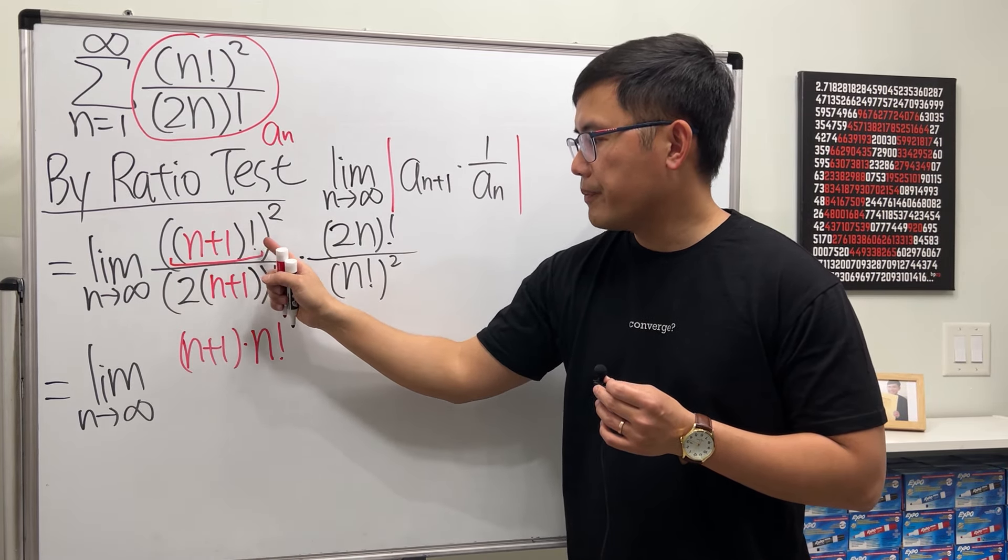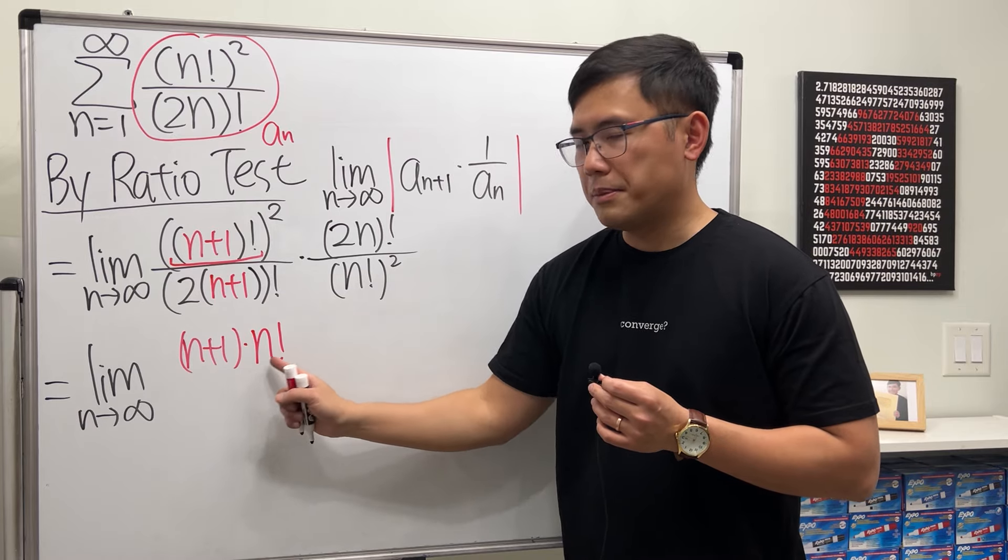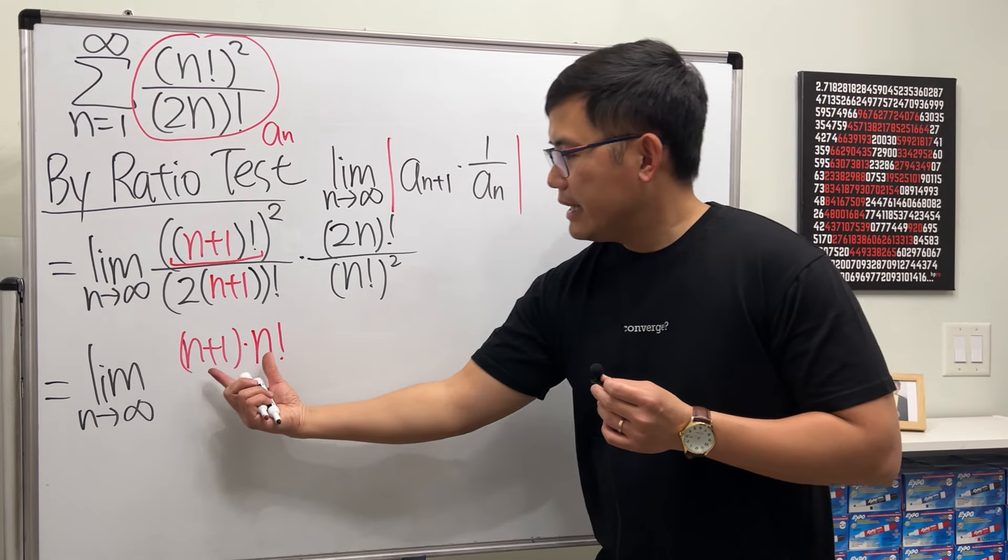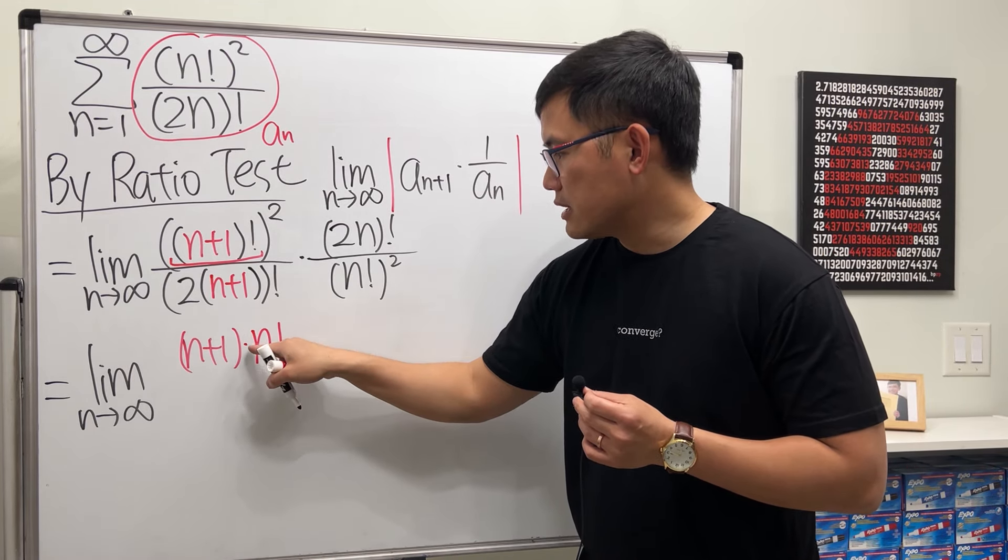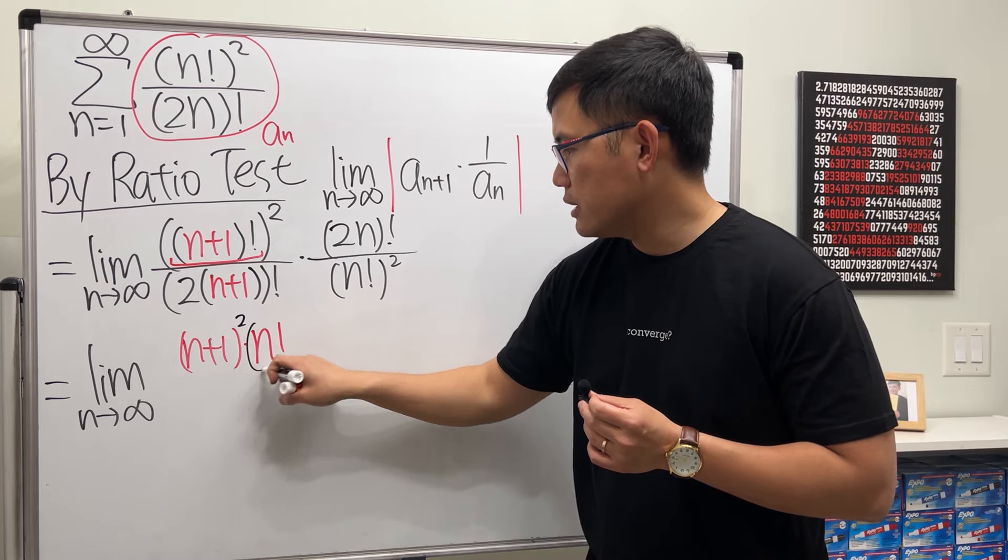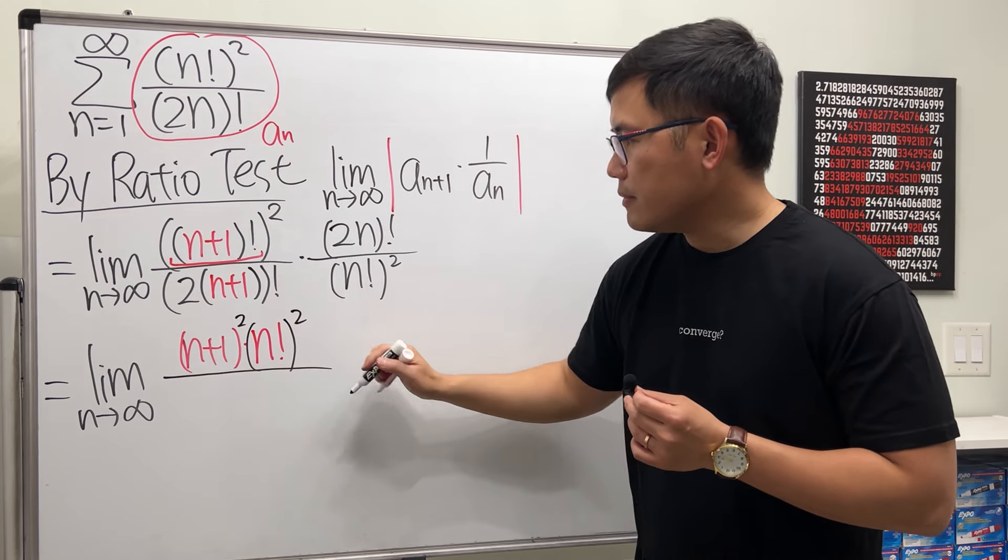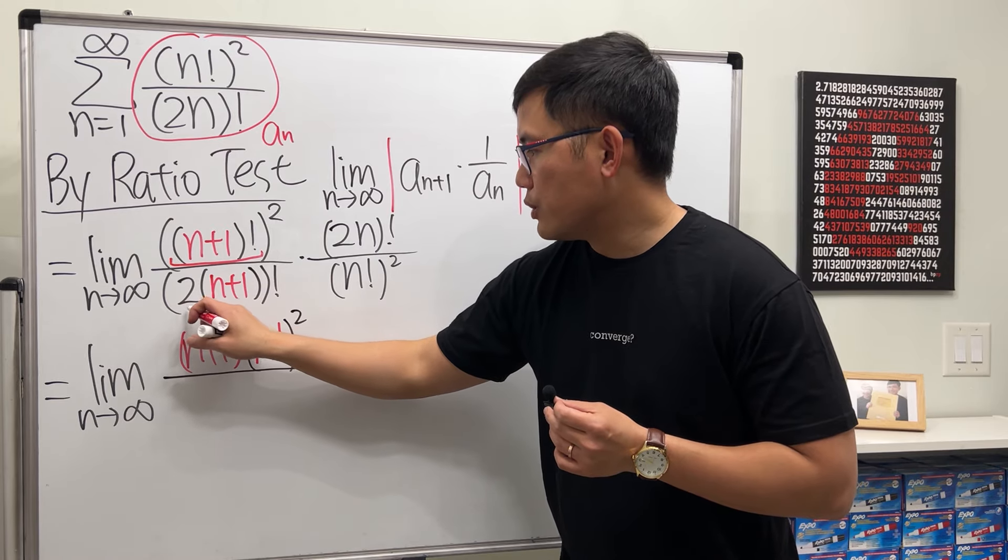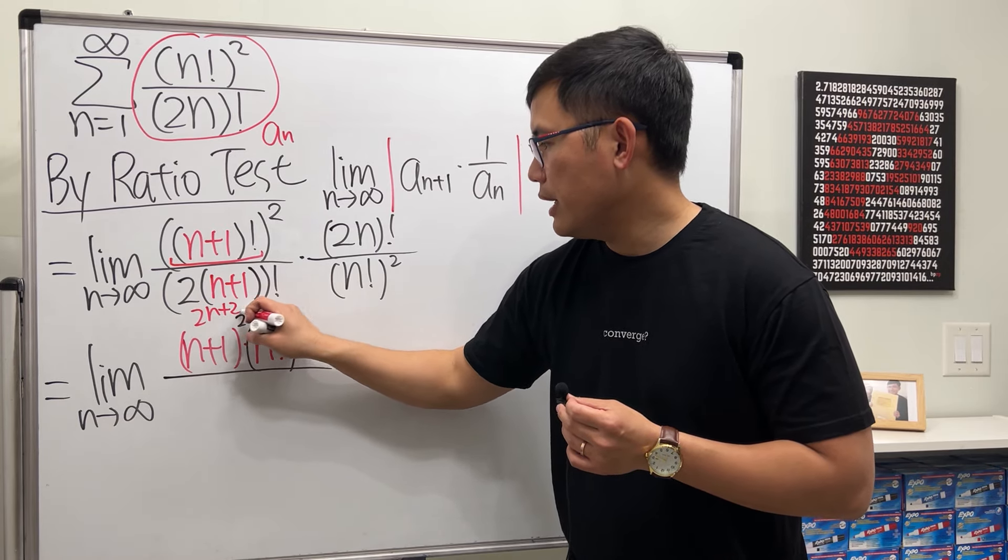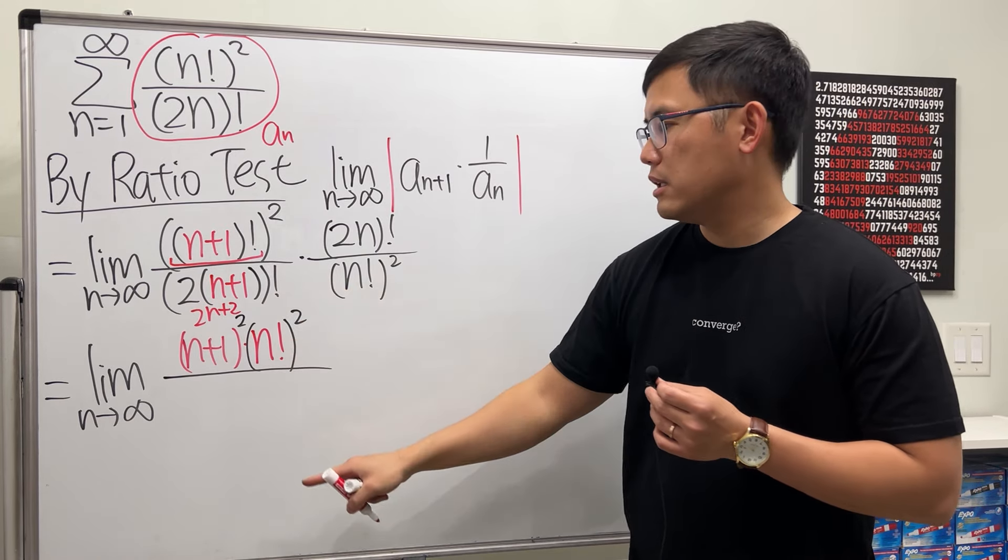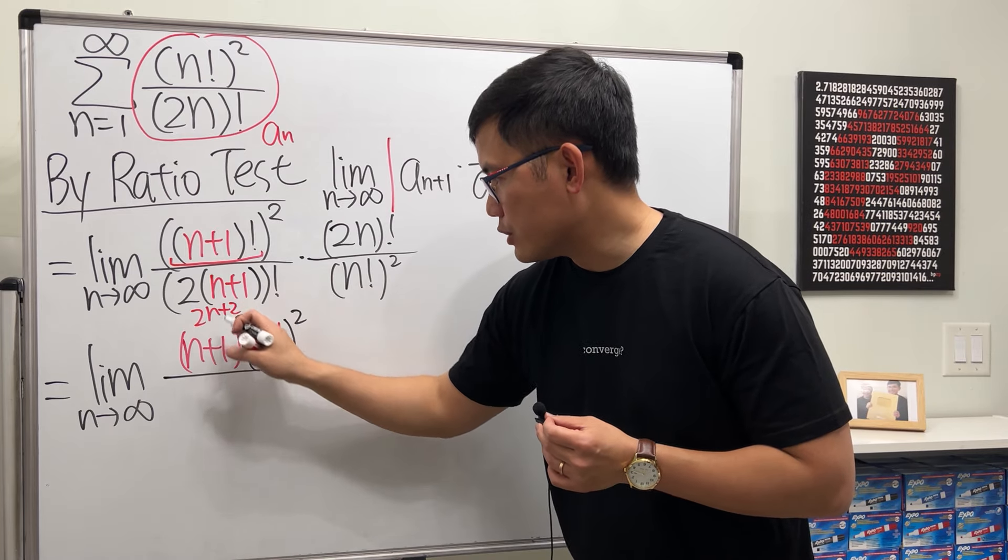So once again, (n+1)! = (n+1) × n!, and then we will have to square this. And this is a multiplication, so I just have to square this and square that. Now for the bottom, this is really just 2n+2, and then we will have to factorial that. So we start with the first term which is 2n+2, and then the next is you just subtract 1, so 2n+1.